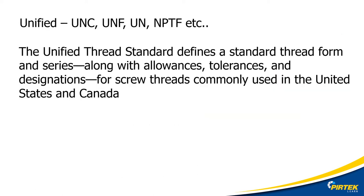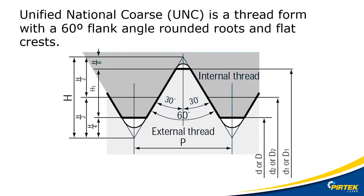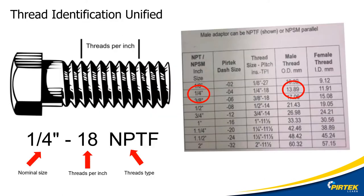In the new colonies like America, the Unified Thread Standard evolved from the British Standard Whitworth. Unified differs from BSW in that it has 60 degree flank angles with a rounded root and a flat crest. As with BSW, the nominal size has nothing to do with the actual diameter of the thread. You'll need to identify it by threads per inch and reference the outside diameter to a chart.